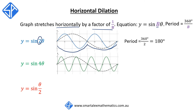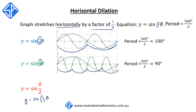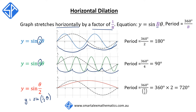For y equals sine 4 theta, the period is 360 divided by 4, which is 90 degrees — one revolution in 90 degrees, two in 180, three in 270, and four in 360. For the last example, y equals sine theta over 2, which is the same as y equals sine of half theta, the period is 360 divided by one half, which is 720 degrees. In other words, it takes 720 degrees to complete one revolution, so 360 degrees only allows half a revolution.